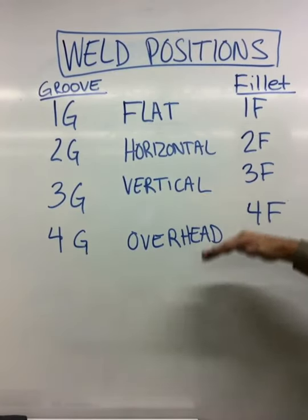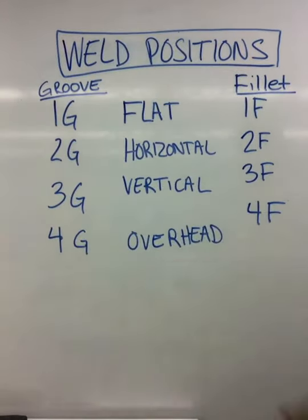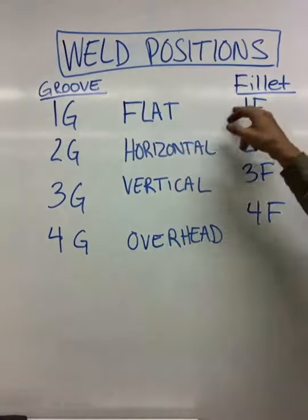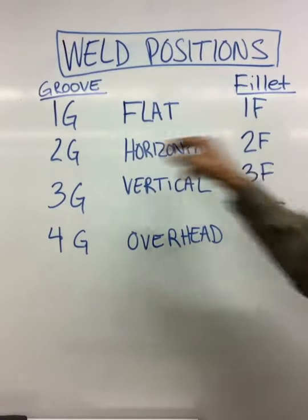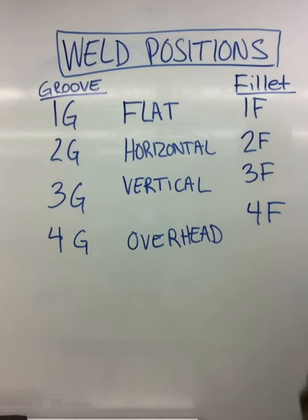vertical, and overhead. And in that order, it's 1, 2, 3, and 4. So flat is always 1, whether it's groove or fillet. 2s are always horizontal, 3s are verticals, and 4s are overhead.